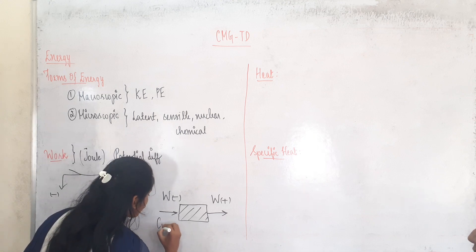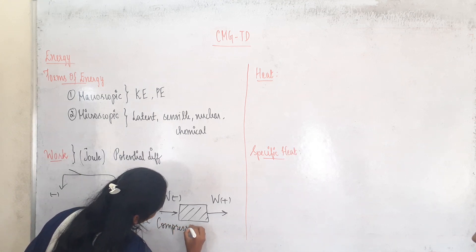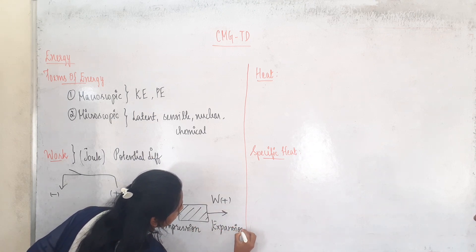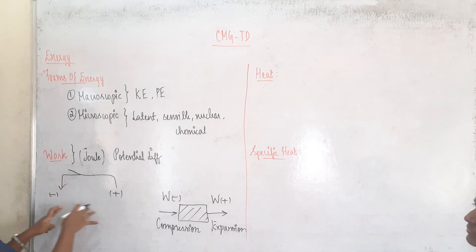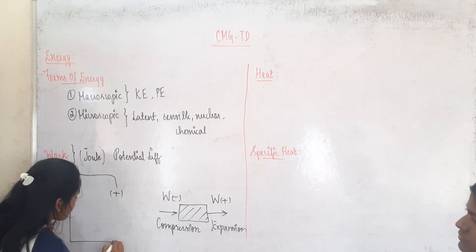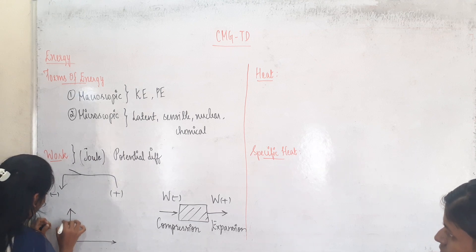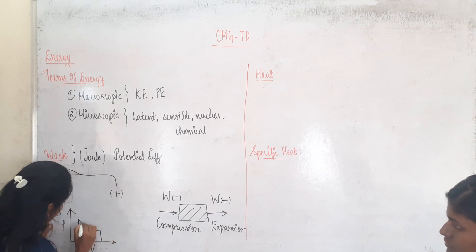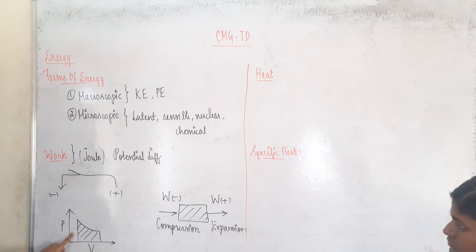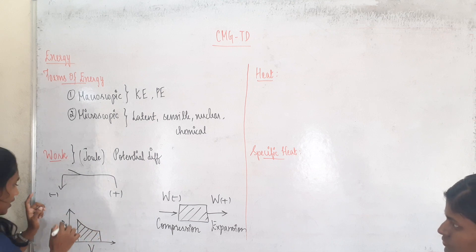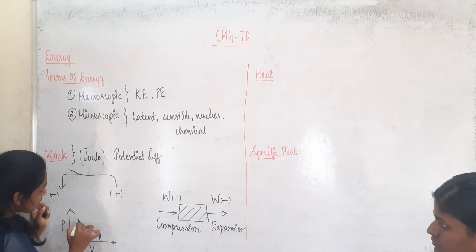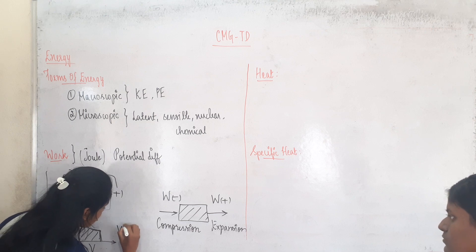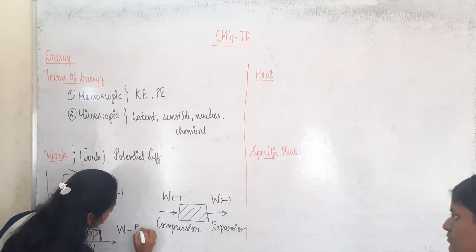Negative work done on the system is compression and work done by the system is expansion. So these are the two types: negative and positive work. When we draw a graph between P and V, that is pressure and volume, the area under this PV graph is called work.